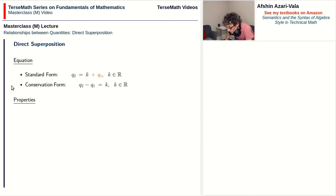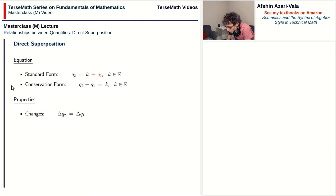A couple of properties of direct superposition relationships. Number one, as far as changes go, a change in the value of one of the quantities is always equal to the change in the value of the other quantity. That makes sense because we said that they both go up and down by the same amounts.